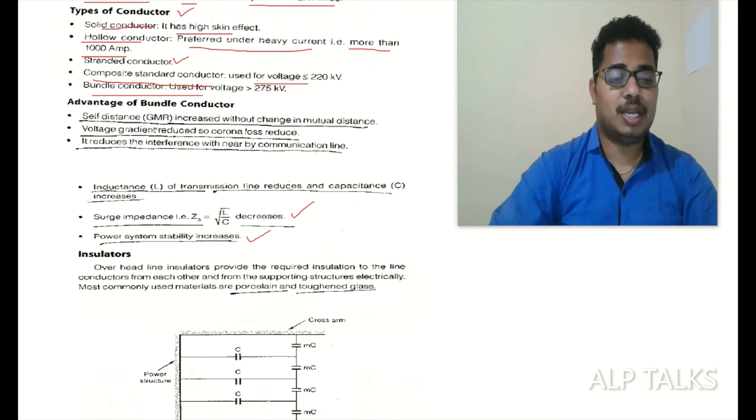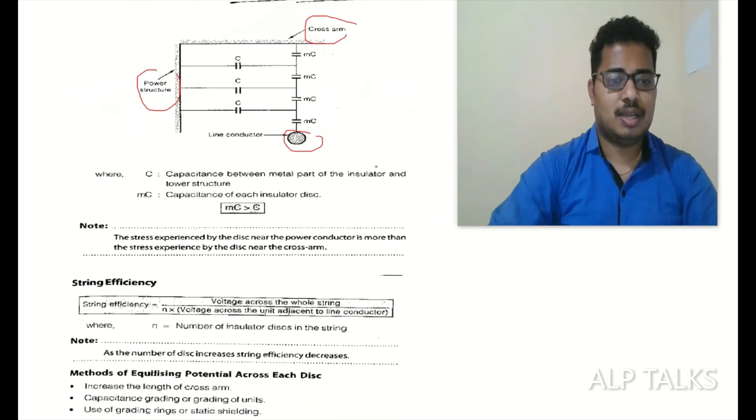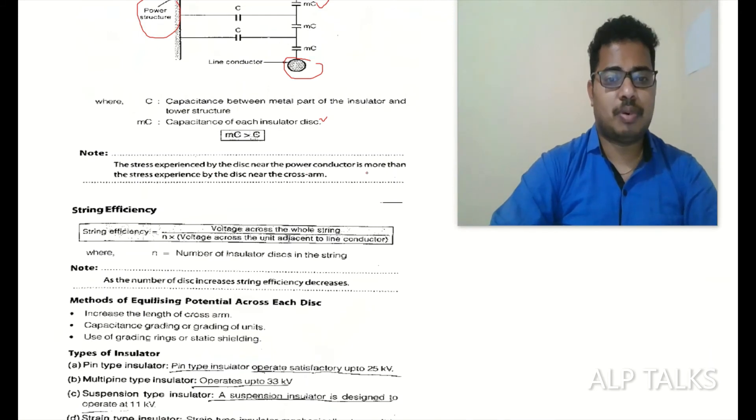It's better to go for bundle conductor. Insulators: we will use just to isolate the conductor from power structure and cross arm power lines. Insulators provide the required insulation to the line conductor from each other and from supporting structure electrically. Most commonly used materials are porcelain and toughened glass. The capacitance C: capacitance between metal part of the insulator and tower structure. MC: capacitance of each insulator disc.